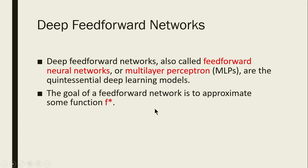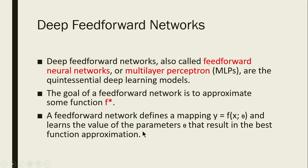The goal of the feedforward network is to approximate some function f*. Using these networks, we are going to find out the approximation for a function. A feedforward network defines a mapping y = f(x; θ), where f is the function we have to learn, y is the output, x is the input, and θ are the parameters we have to learn to get the best function approximation.